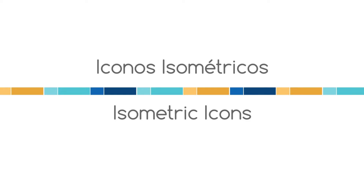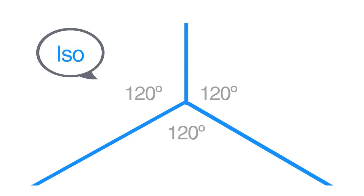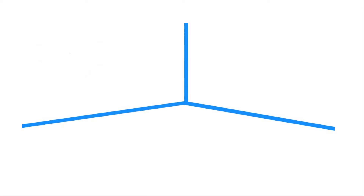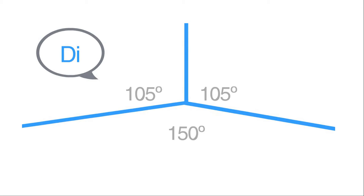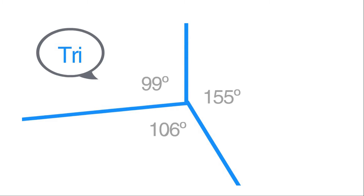Isometric Icons. The axonometric plane helps you to create perspective. There are several types: the isometric with equal size, the dimetric with a wider perspective, and the trimetric with an asymmetric perspective.